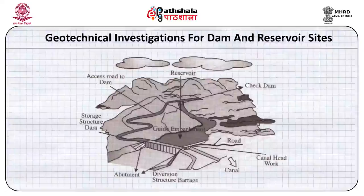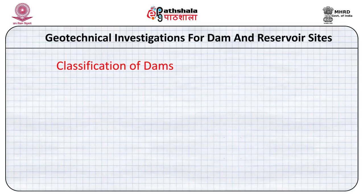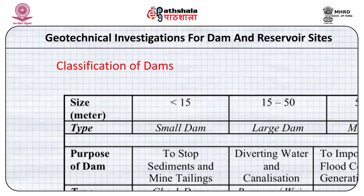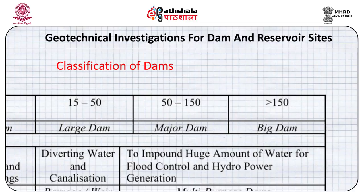Dams can be classified based on their height, purpose, and material used. A dam with height less than 15 meters is called a small dam; 15 to 50 meters is a large dam; 50 to 150 meters is a major dam; and more than 150 meters is a big dam.